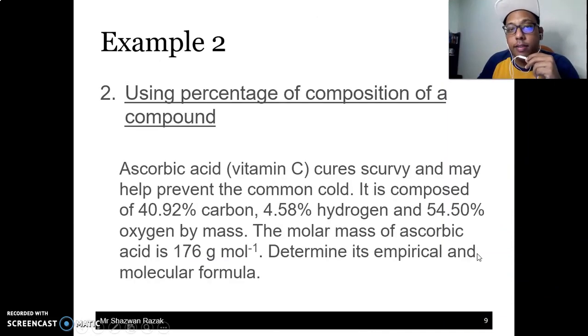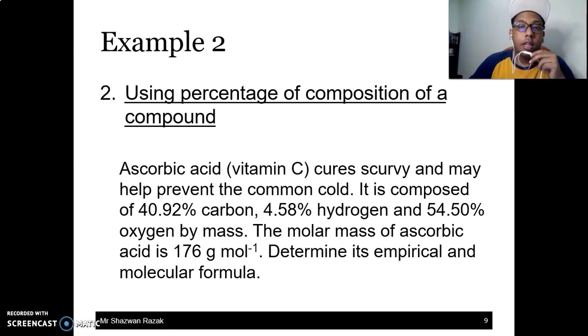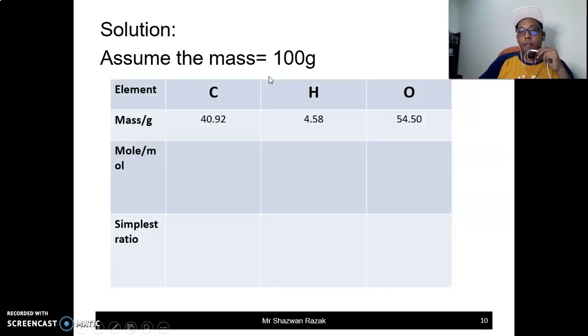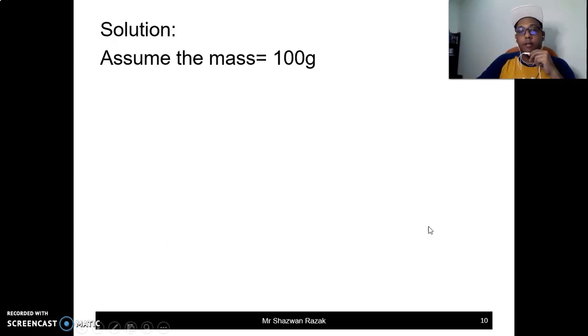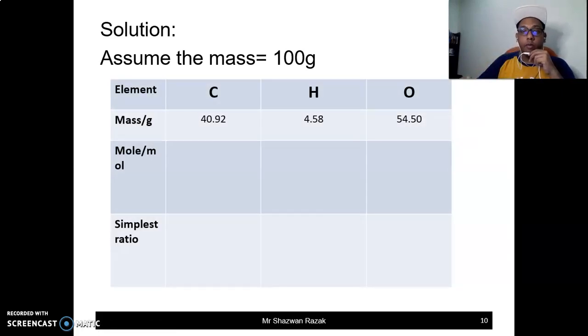Alright, kita teruskan with the next example. Example tu, kita nak tengok in term of penggunaan percentage. So what we will do here is we will be asked to determine the empirical and molecular formula. So kalau kita terus tengok pada ni, apa yang kita buat adalah kita akan assume dulu mass dia sama dengan 100 gram. Disebabkan percentage, kita assume 100 gram. So dalam setiap 100 gram tu, mesti ada 40.92. How do I know this? 40.92 daripada sini. It have 40.92% of carbon, 4.58% of hydrogen and 54.50% of oxygen. So we got our mass.